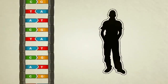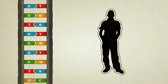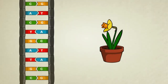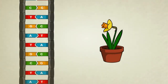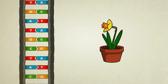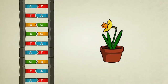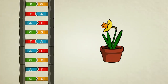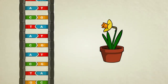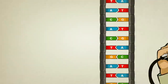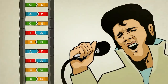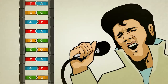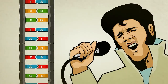The information in your DNA is different than that of a daffodil's DNA, which is why you look and function differently than a daffodil. The information in your DNA is slightly different than that of Elvis Presley, which is one of many reasons you don't look or act quite like he did.